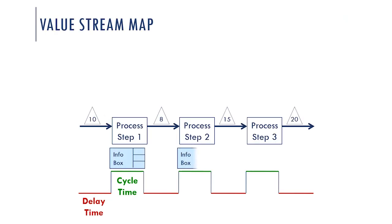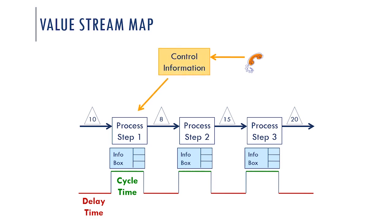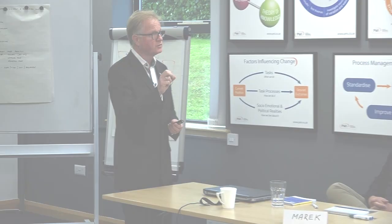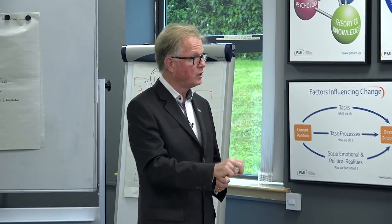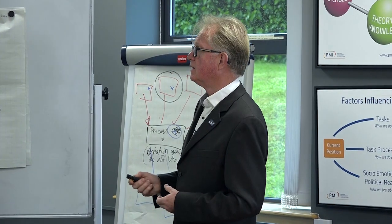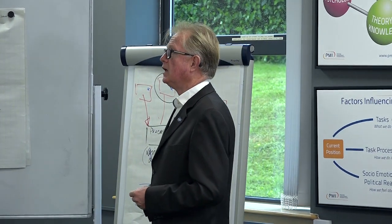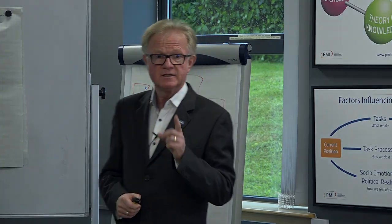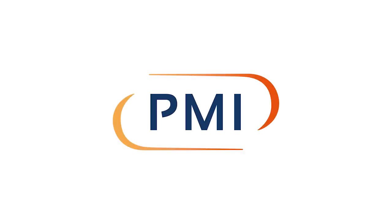Then we have our info box. What is the control information? How is it made — how does the instruction for work get generated? Now I'm going to get you back to your exercise to apply what we've covered.